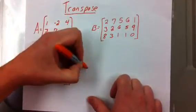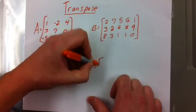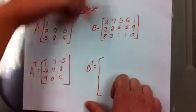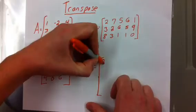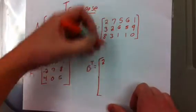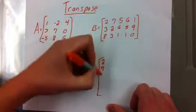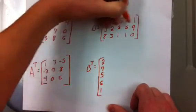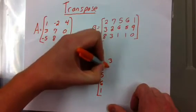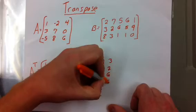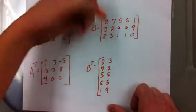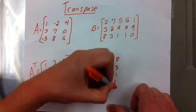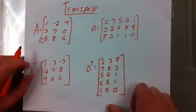Let's do another one, a bigger one. B transpose is equal to, we're going to have, this is our first row, so in B transpose it's going to be our first column. So we have 2, which is the same, the first one is always the same. Then we have 7, then we have 5, 6, and 1. Now our second row becomes our second column, 3, 2, 6, 5, 9. And again, the third row becomes the third column, 8, 3, 1, 1, 0. And that is B transpose.